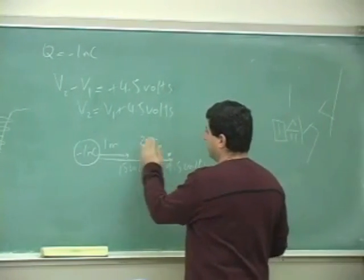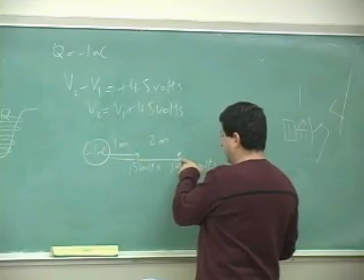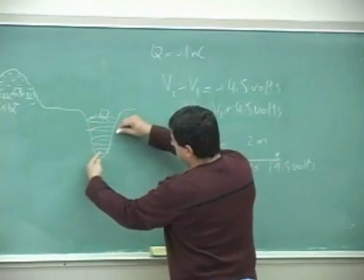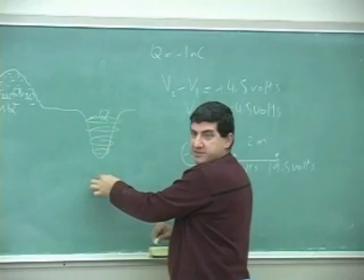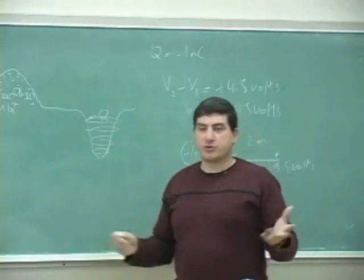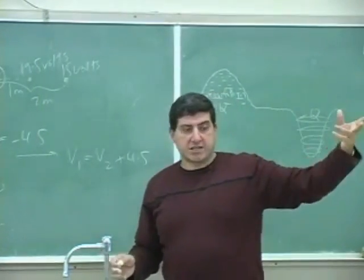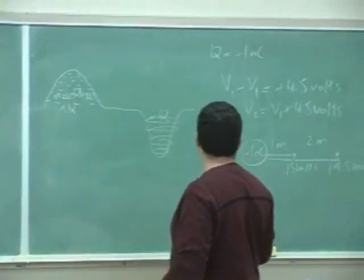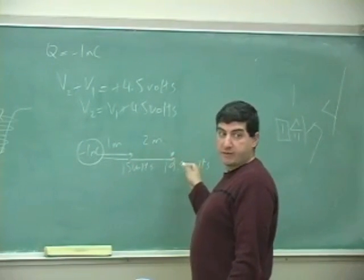So the potential near a negative charge is going to be lower than the potential farther away from it — which is to say, as you get near the center of a valley, the heights get lower and lower. As you go away from the valley, the height gets higher and higher. The negative causes the potential difference to work itself out so that potential near a negative charge is lower than the potential farther away from it.